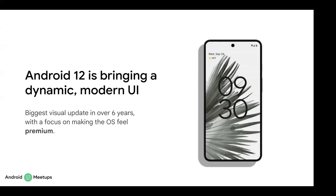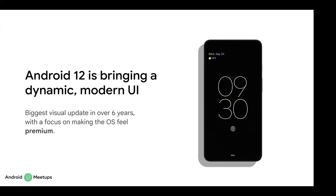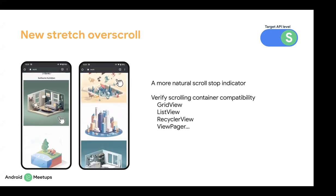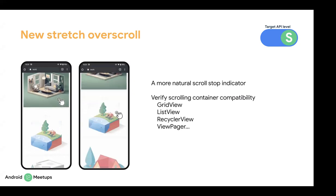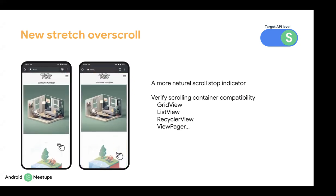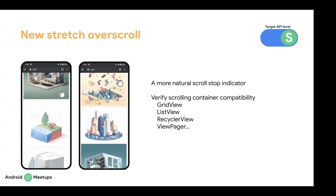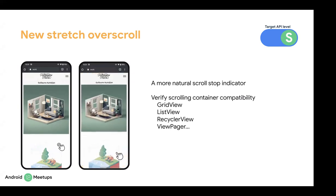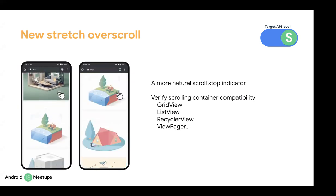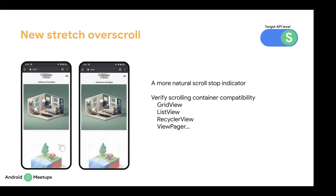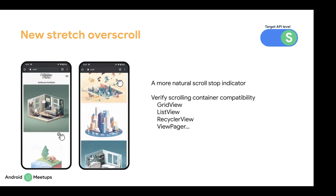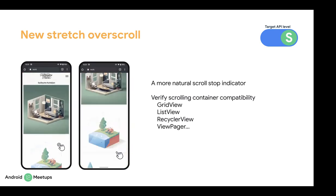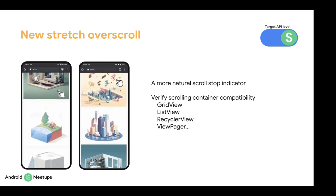A lot has changed in Android 12 to make the user interface more dynamic, modern, and responsive. There is a new stretch overscroll in Android 12, which replaces the glow effect in earlier Android versions. This overscroll behavior is supported if you update your app to target SDK level 31 or more. In classic views, you can see it in grid view, list view, circular view, and view pager. In Jetpack Compose, you can see it in lazy column, lazy row, and lazy vertical grid.